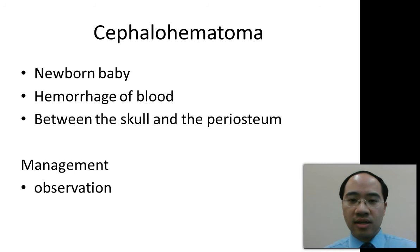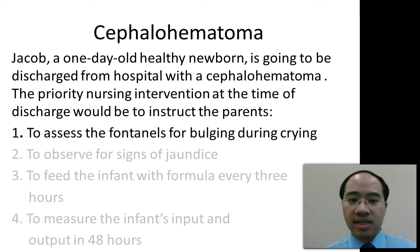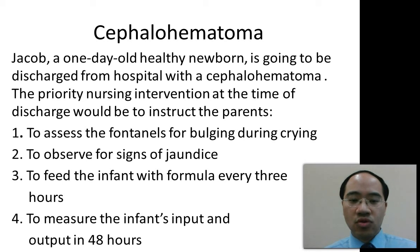The nursing intervention is to observe the newborn baby. Here's a typical type of question dealing with cephalohematoma. Jacob, a one-day-old healthy newborn, is going to be discharged from hospital with a cephalohematoma. The priority nursing intervention at the time of discharge would be to instruct the parents: 1. to assess the fontanelles for bulging during crying, 2. to observe for signs of jaundice, 3. to feed the infant with formula every 3 hours, 4. to measure the infant's input and output in 48 hours.